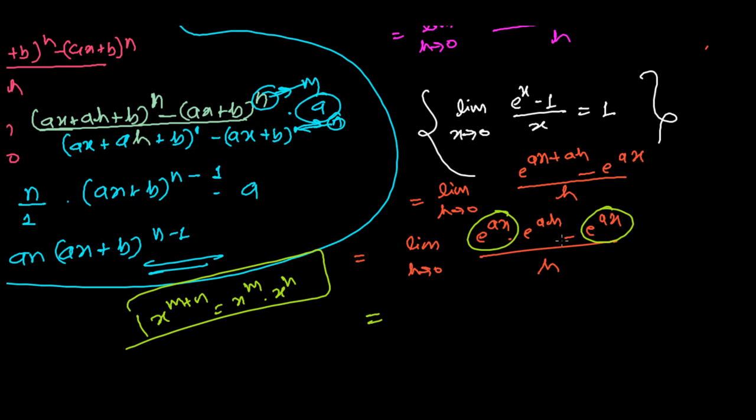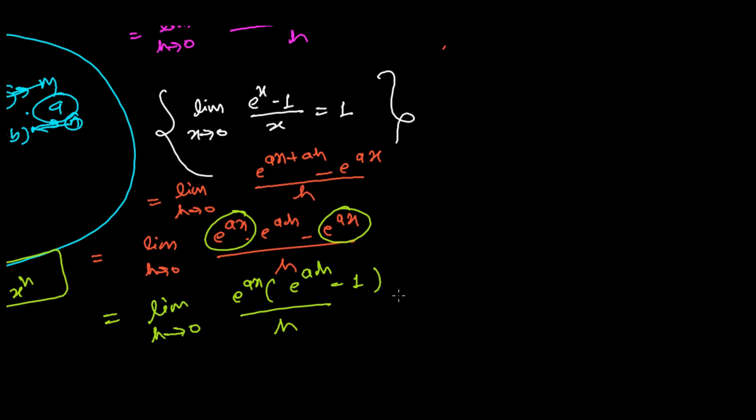Now in the next step, I'm going to take e^(ax) common. So it will be lim(h→0) e^(ax)[e^(ah) - 1]/h. Let's write it more nicely: lim(h→0) [e^(ah) - 1]/h, then times e^(ax).